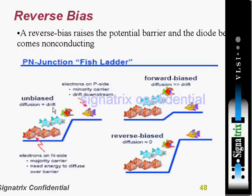Biasing means connecting a voltage source. When the junction is unbiased, diffusion equals drift. When you are forward biasing, current will flow in the circuit because of diffusion. When you are reverse biasing, a small current will flow because of drift. This is the standard concept we study.